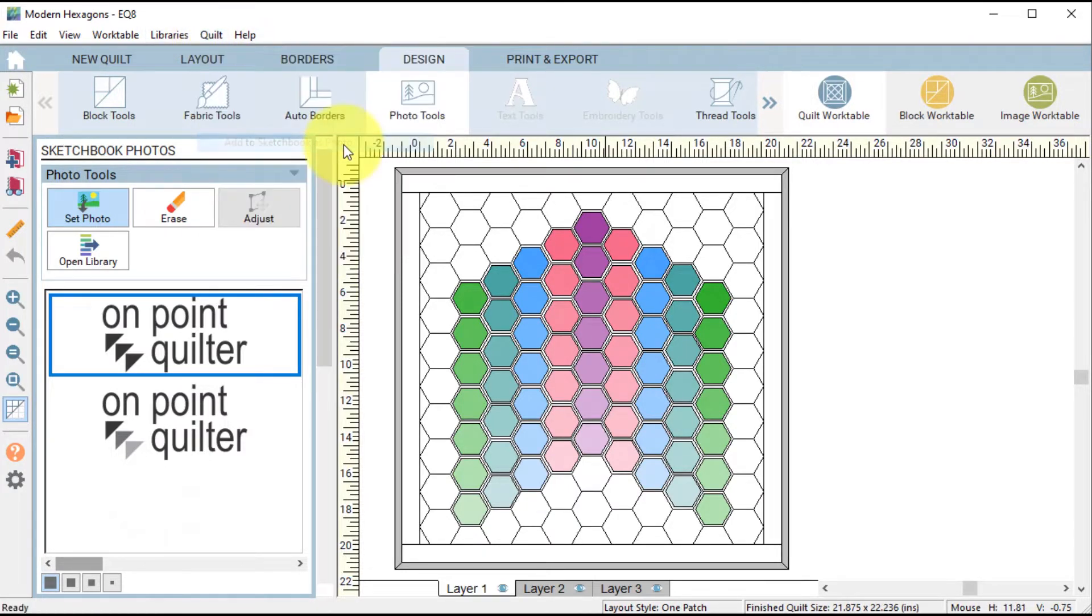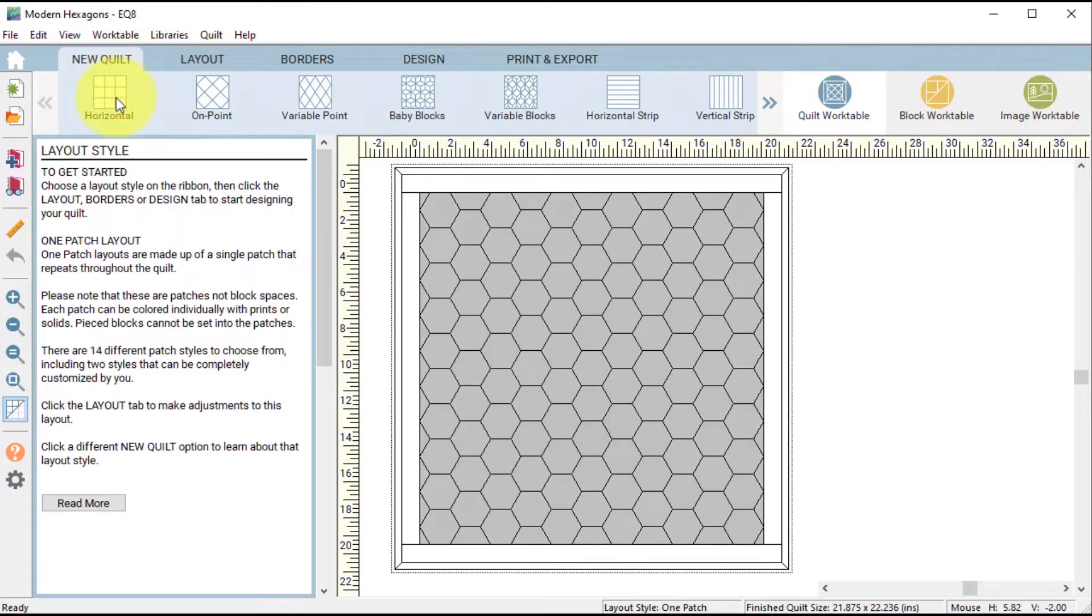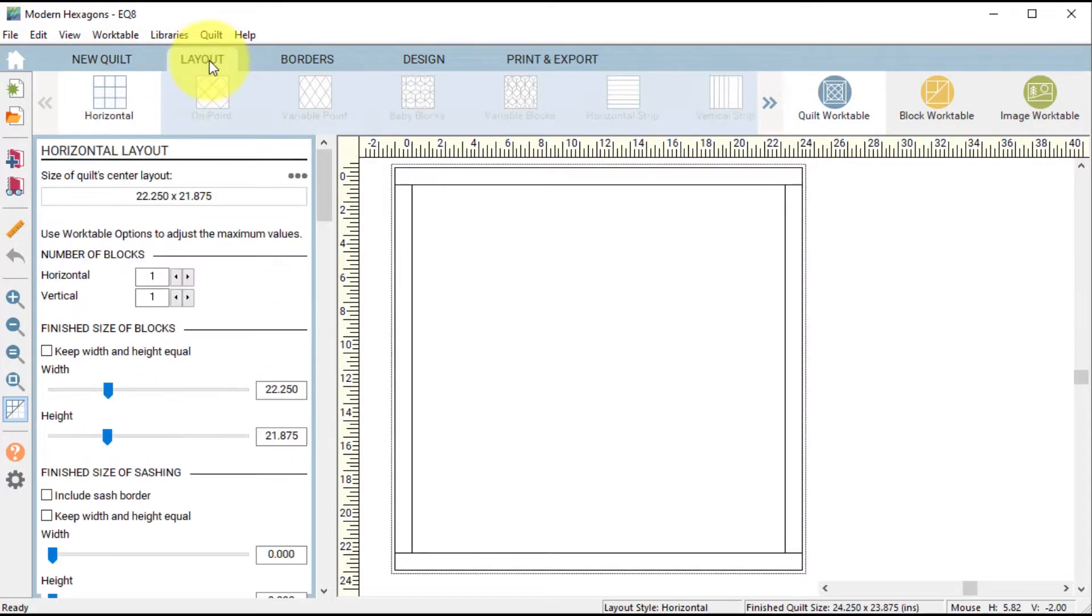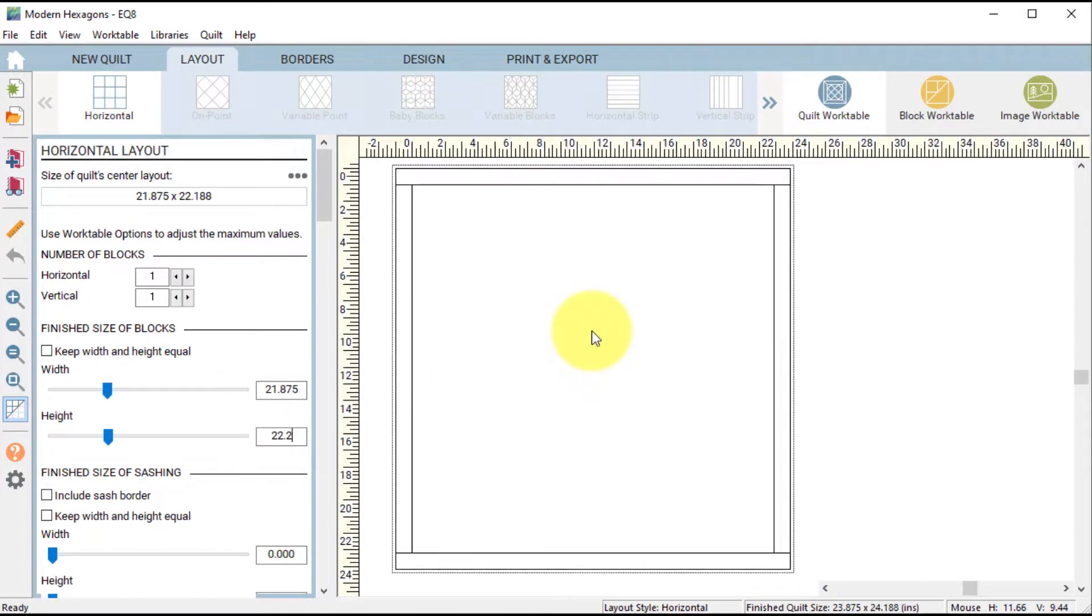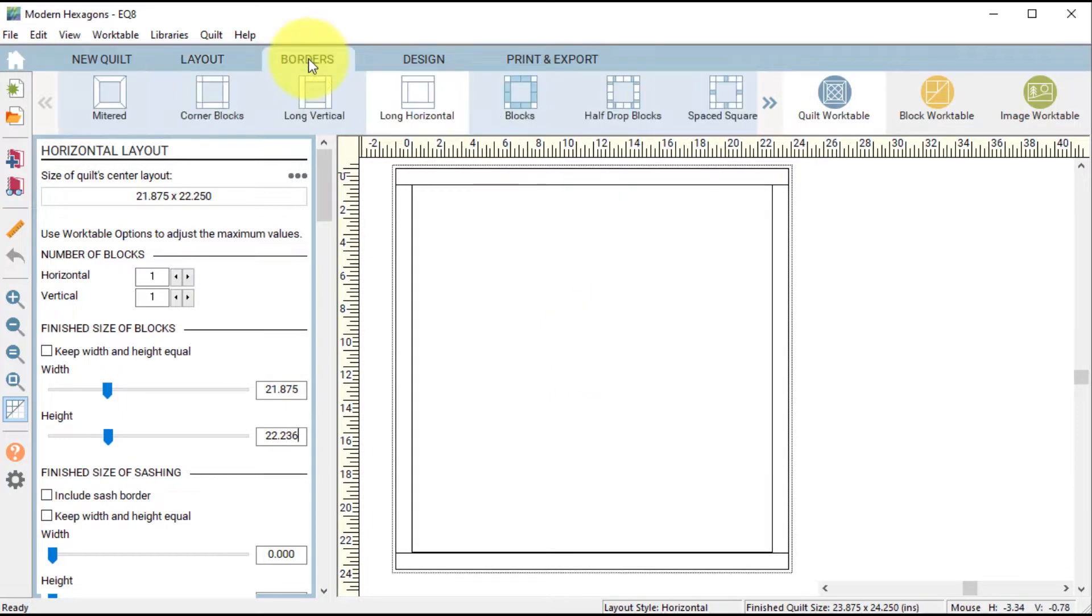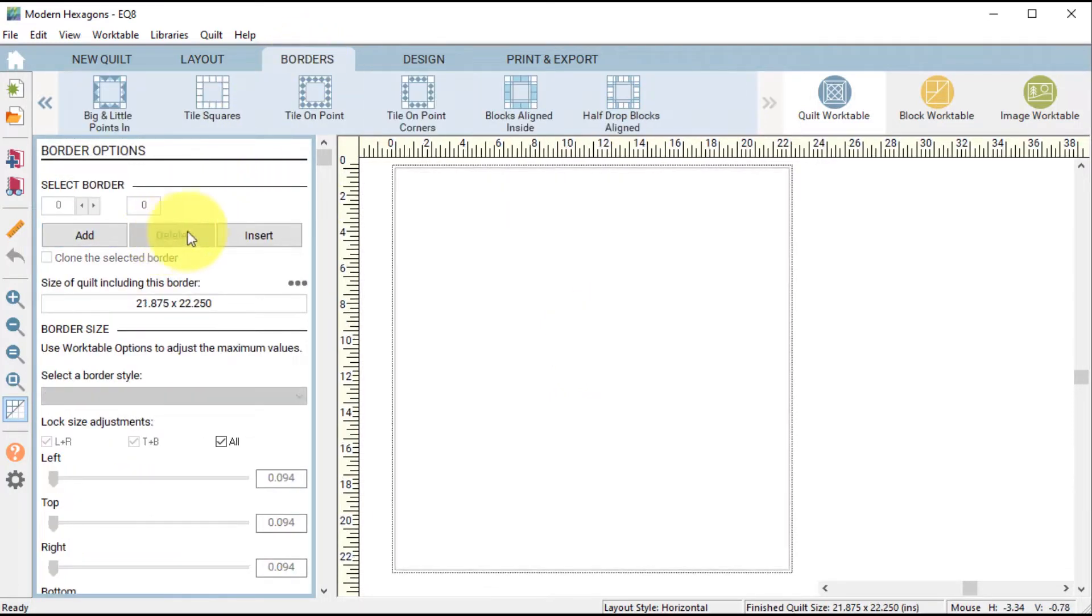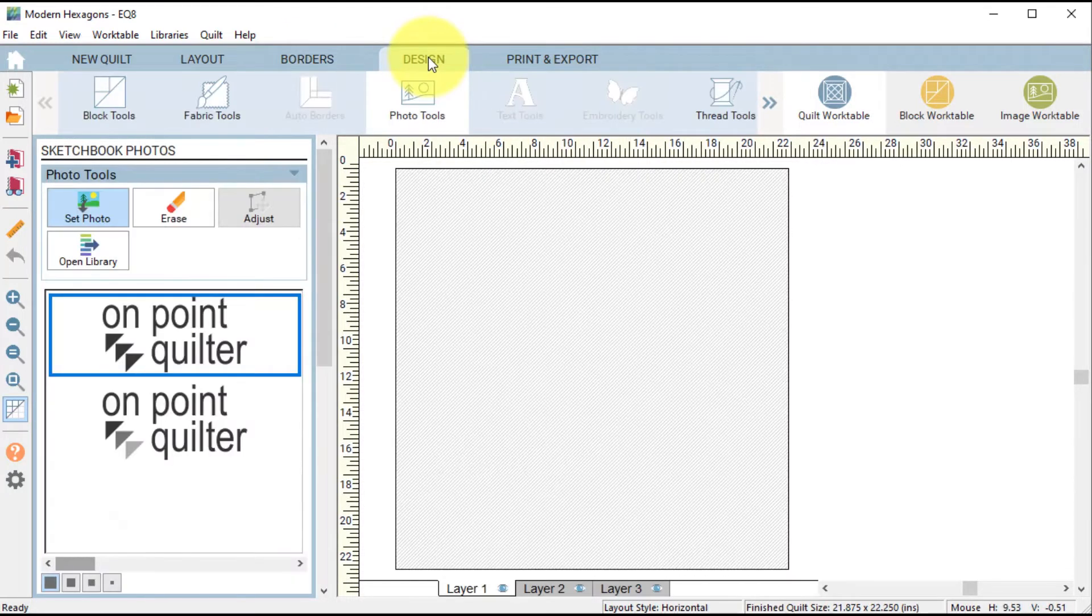Then I will do a new quilt, Horizontal, for the layout, I will select a one-by-one layout, and I'm going to make the size 21.875 x 22.236. Go to the Border tab and delete the border.